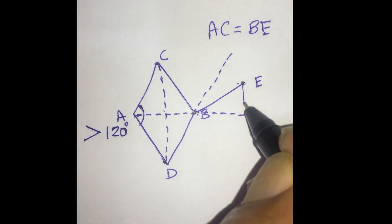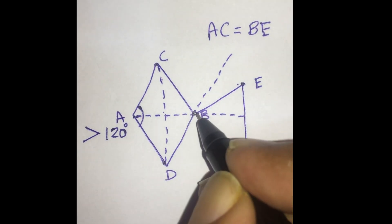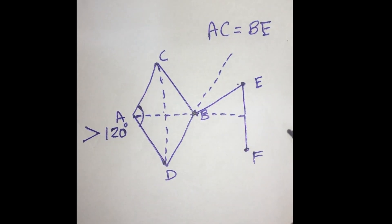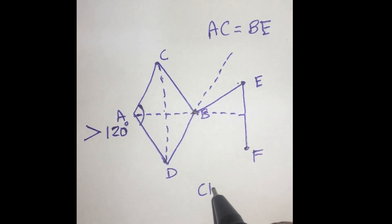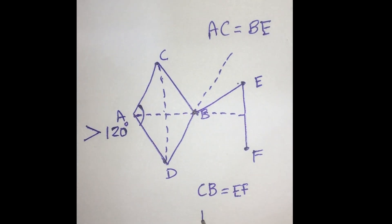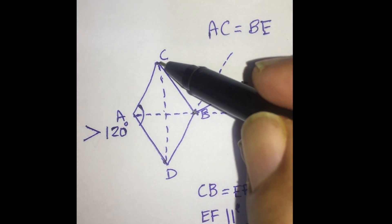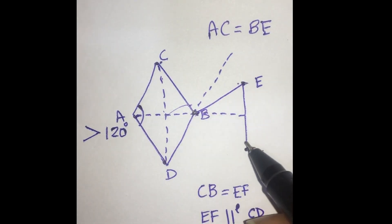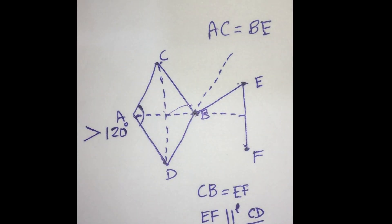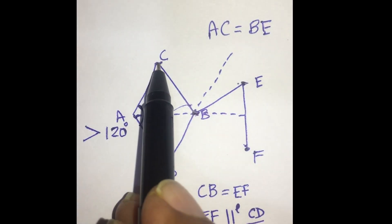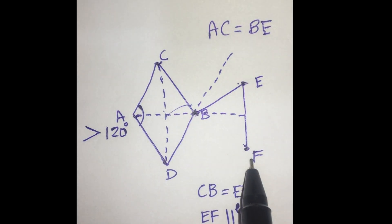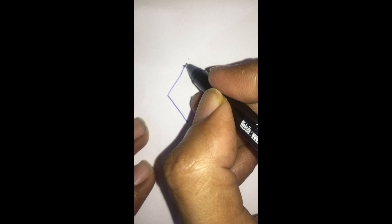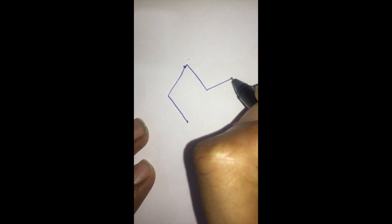These two extended lines are bisected by the line BE, which is equal in length to AC. From the point E, a line is drawn parallel to the long diagonal CD. The length of this line EF is equal to the length of CB. So CB is equal to EF and the line EF is parallel to the long diagonal CD. When the flap DBEF is raised, the point B goes to A, the point F goes towards point B, and the angle E sits in the angle formed by C.